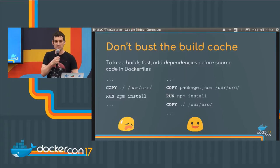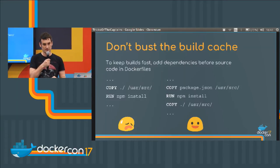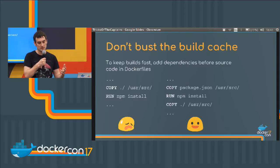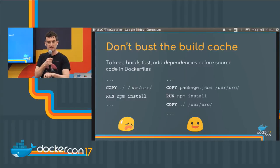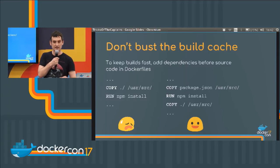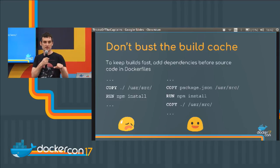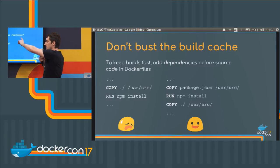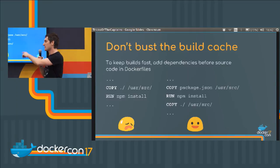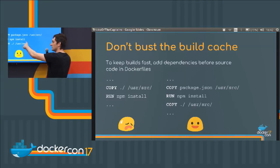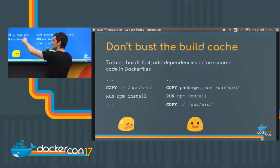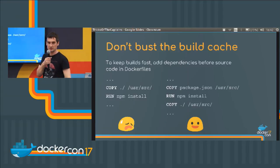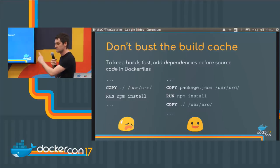The next tip, and I see a lot of Docker beginners doing this wrong, is: don't bust the build cache if you don't have to. If you're using NPM or Python PIP modules, you've got a `requirements.txt` or a `package.json` that defines your dependencies. What you want to do is copy that file over separately at the start, before the rest of your source code, and then run `npm install` or `pip install`. That way, if a file in your source code changes, it doesn't invalidate those two lines. If you don't do this, any change to your source code will cause the NPM install to rerun even if you haven't changed your `package.json`, which slows everything down hugely.